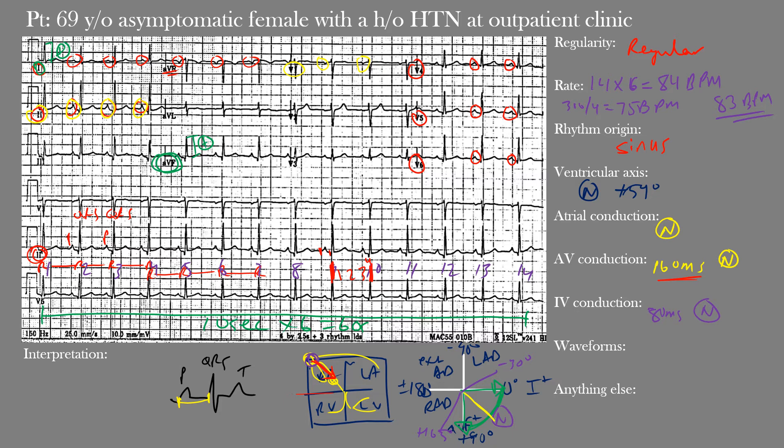Regarding the waveforms: the P waves are normal with no significant prolongation or increase in amplitude in leads II or V1. There are no abnormal Q waves. The T waves are present, asymmetric, and appear normal — T-wave amplitude generally decreases with age and tends to be lower in females. The PR segment is not significantly depressed or elevated. The QRS amplitude appears normal. The ST segment does not appear significantly elevated or depressed anywhere on the EKG. The QT interval is within normal limits — overall, no major waveform abnormalities.